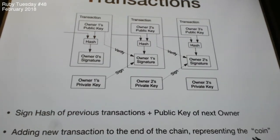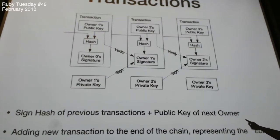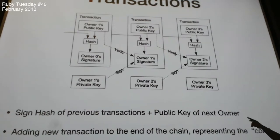A public-private key encryption methodology means that when you sign something — say for example owner 0 signs this transaction with his private key — the signature can be verified very easily with owner 0's public key. That's just how private-public key works. I wish I had put in a diagram here, but that's just how it works.